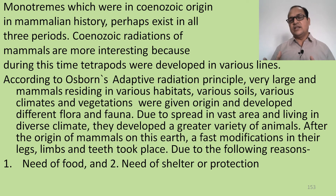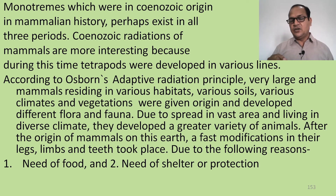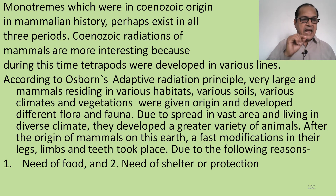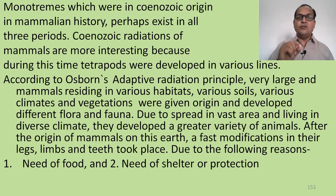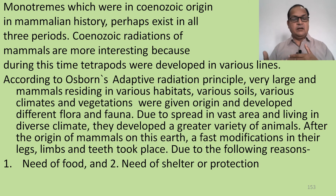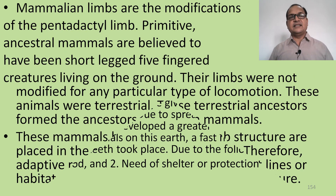After the origin of mammals on earth, vast modifications in their legs, limbs, and teeth took place. The reasons for this adaptive radiation were: first, the need of food — a very important factor — due to which teeth were modified into different shapes; and second, the need of shelter and protection, due to which limbs were modified into various shapes.